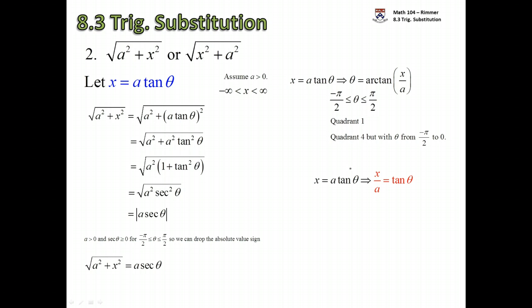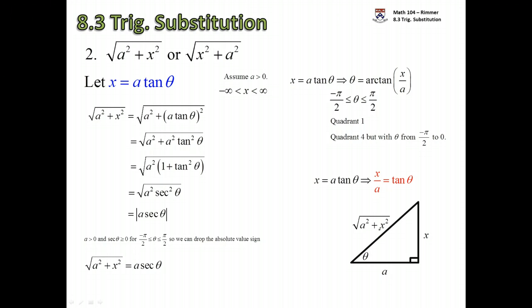The reference triangle is built from the substitution. Dividing x = a·tan(θ) by a gives tan(θ) = x/a. Tangent is opposite over adjacent, so draw a right triangle with theta at the base: the opposite side is x and the adjacent side is a. The third missing side — found by the Pythagorean theorem — is the root of a squared plus x squared, which is the root that brought us here. This reference triangle lets you transfer back from theta into x.